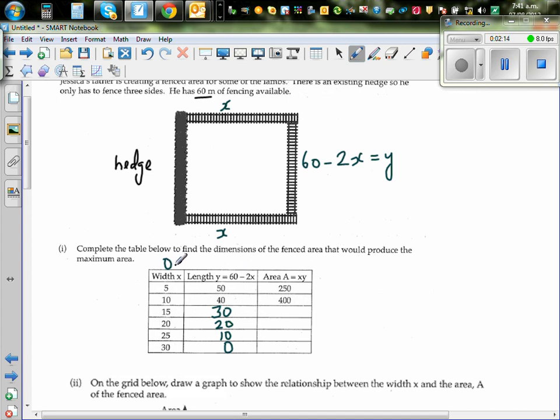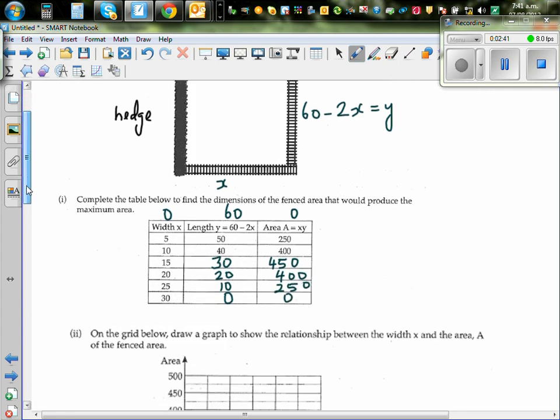If your width is 0, let's start with 0. So if it's 0, this will be 60 and your area is going to be 0. If it's 30, 15 times 30 is 450. 20 times 20 is 400. 25 times 10 is 250. And 30 times 0 is 0.